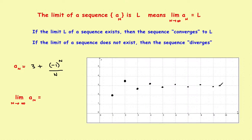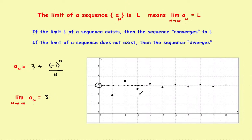The terms get closer and closer, going above then below a line at 3. So the limit of this sequence approaches 3. It is alternating, but the limit still exists because it's settling on a fixed number. In the previous example, it oscillated between 2 and 4 without settling, but here it does settle. So the limit exists, the sequence converges, and it converges to 3.